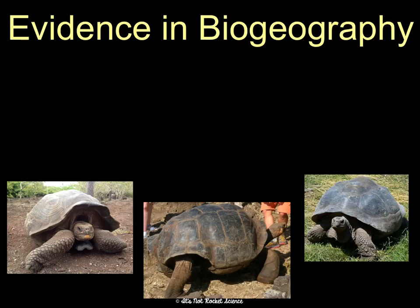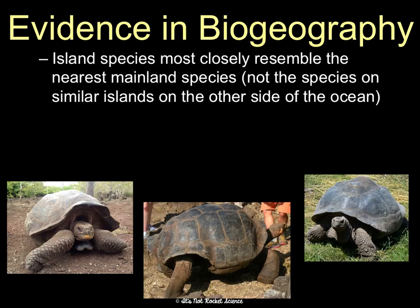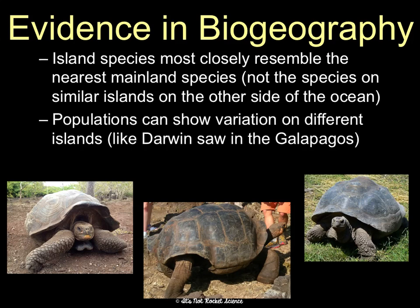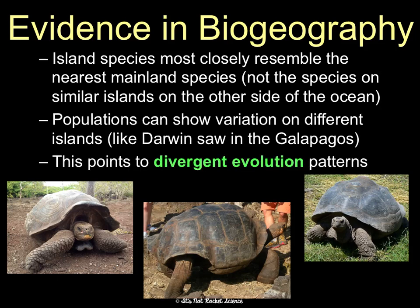Next is evidence in biogeography, the study of where living things are located. This is really where Darwin got a lot of his information — studying island species like his tortoises, finches, and beetles, and seeing how they most closely resemble the nearest mainland species, not species on similar islands on the other side of the ocean. But also how populations can show variation on different islands as they adapt to their specific environments, like Darwin saw on the Galapagos Islands.